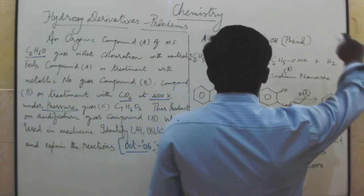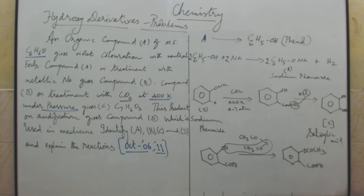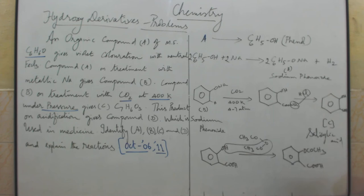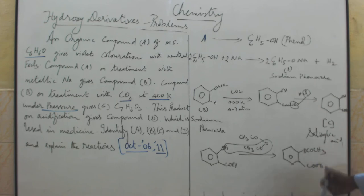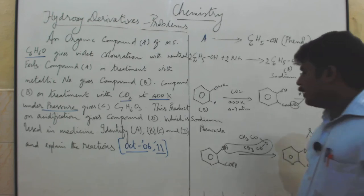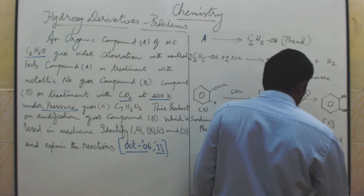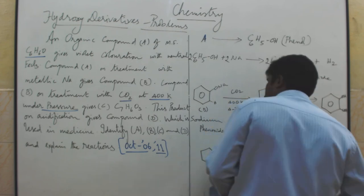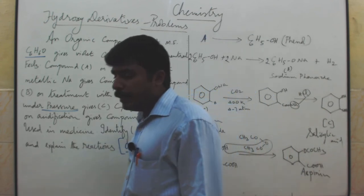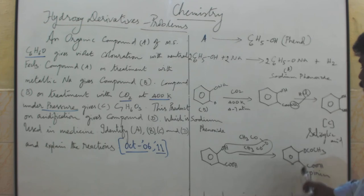So to summarize: compound A is phenol; phenol reacts with metallic sodium to give sodium phenoxide (B); sodium phenoxide reacts with CO2 at 400 Kelvin and 4 to 7 atmospheric pressure to give sodium salicylate; sodium salicylate decomposed in HCl gives salicylic acid (compound C); salicylic acid reacts with acetic anhydride to give acetyl salicylic acid, namely aspirin (compound D), which is used in medicine.